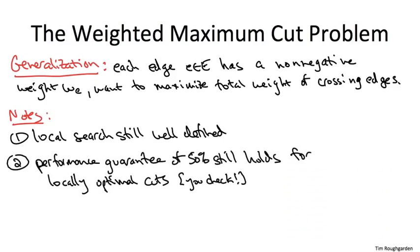One cool thing is that the performance guarantee that we just established of 50% for the output of local search, that carries over to the weighted case, and the proof remains essentially the same, and I'll leave it for you to check that in the privacy of your own home. Now, it's also true that in the weighted case, a random cut still gets 50% of the total weight of the graph, so perhaps this performance guarantee is nothing really to write home about.